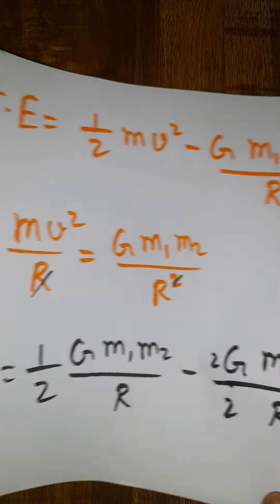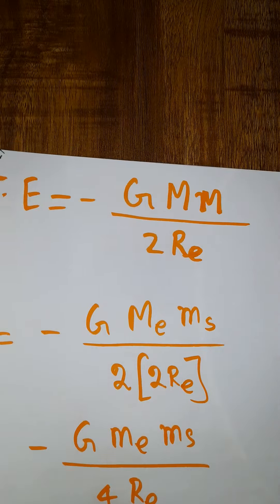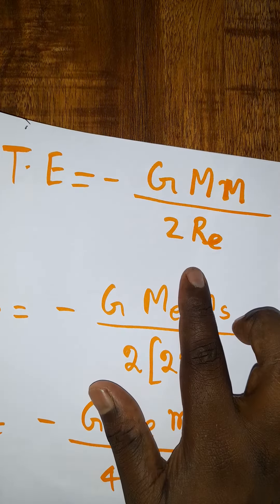So finally I will get the total energy as minus GMm divided by 2 times r.